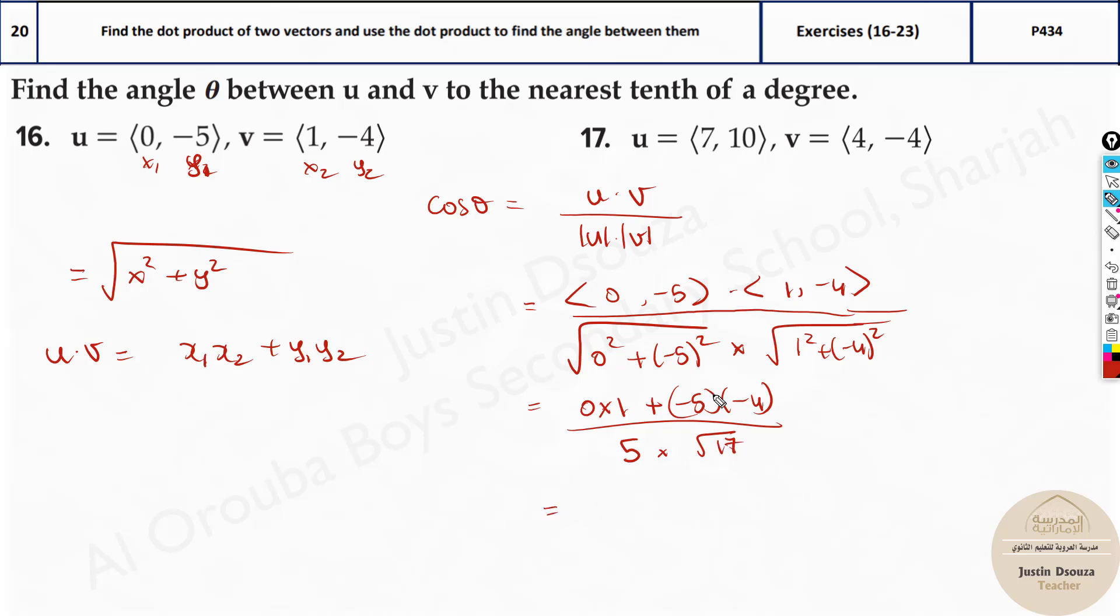Now over here we can simplify this. It will be 20 divided by 5 root 17. This is 1 time. This is 4 time. The answer is 4 by root 17.